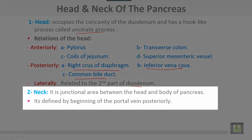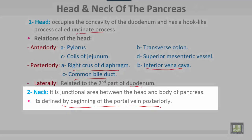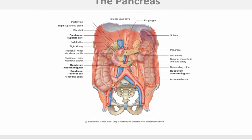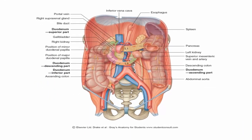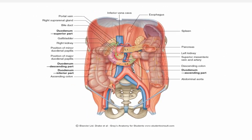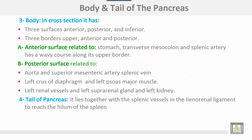The neck lies at the junctional area between the head and the body of the pancreas. The neck can be defined by the beginning of the portal vein posteriorly, as it lies in front of the union between the superior mesenteric vein and the splenic vein to form the beginning of the portal vein.